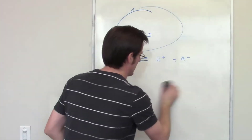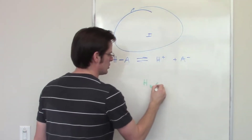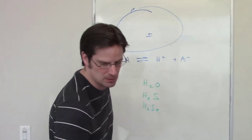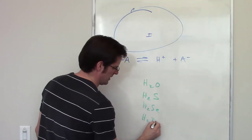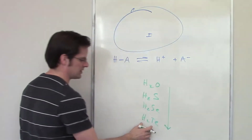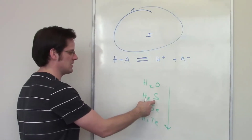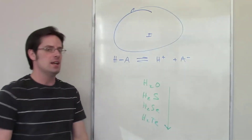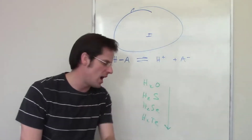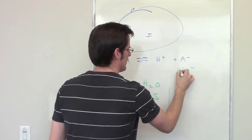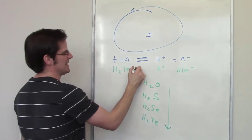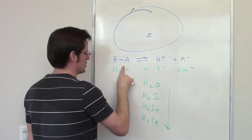Let's look at these analogues: hydrogen stuck to oxygen, hydrogen stuck to sulfur, hydrogen stuck to selenium (right underneath sulfur on the periodic table), and hydrogen stuck to tellurium. Which is most acidic? Tellurium. H₂Te is much more acidic than H₂Se, which is much more acidic than H₂S, which is much more acidic than H₂O. Why? Not electronegativity — oxygen is the most electronegative of the series. It's all based on size. Te⁻ is much more stable, so H₂Te releases its proton far more readily than H₂O.